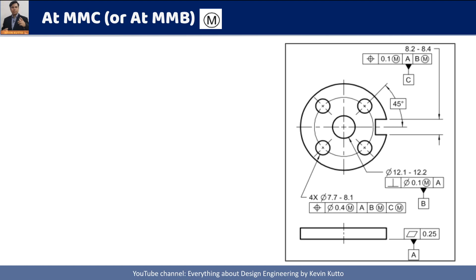When this symbol is associated with a datum reference, the resultant boundary is called Maximum Material Boundary (MMB). When this symbol is associated with the geometric tolerance, the resultant boundary is called Maximum Material Condition (MMC).